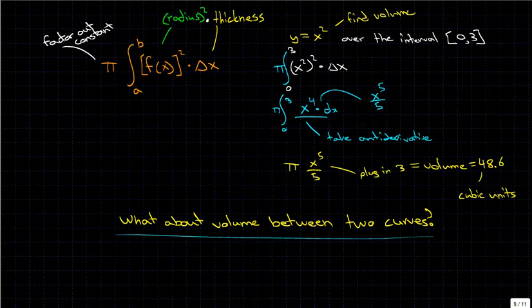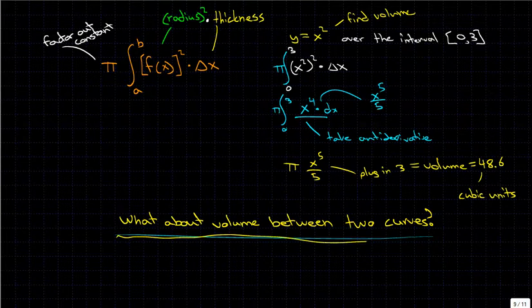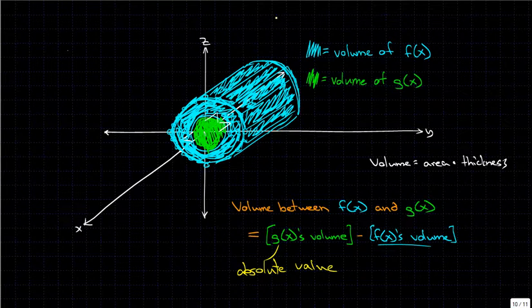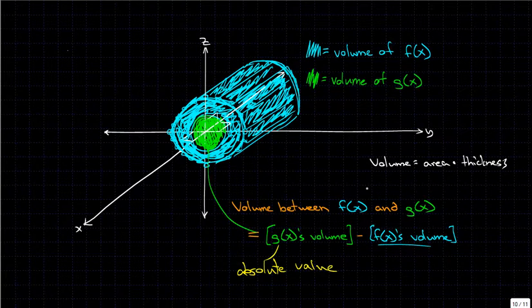The other type of question we can get is, we are given two functions. We're given, say, f of x and g of x, and they ask us, find the volume between those two curves. And really, this is quite simple. Intuitively, we know that the blue would be the volume of the, let's say, f of x. And then green here would be the volume of g of x. Green is going to continue through, we just can't see it because it's being blocked by f of x. So the volume between f of x and g of x is simply, we calculate the volume of g of x, and then we calculate the volume of f of x, and then we just subtract them.